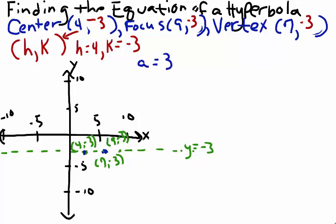The distance from the center, where x equals 4, to the focus, where x equals 9, is a distance of 5 units. So c equals 5.